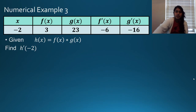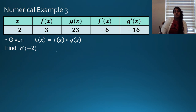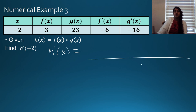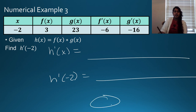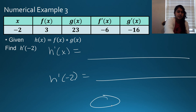The final numeric example is written in a table, and I want you to pause and do this. Evaluate what h prime of x is, get the equation, then solve for h prime of negative 2, plug it in, and get an answer. I have the answer written in, so pause, do the work, then look at your answer.